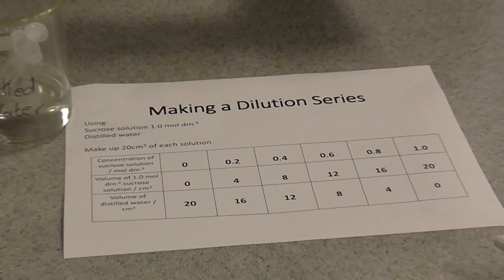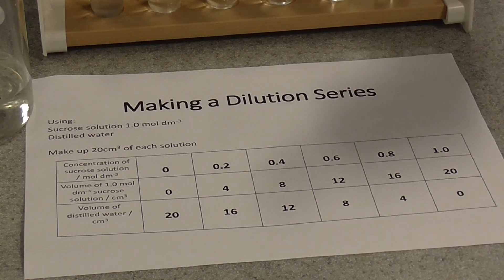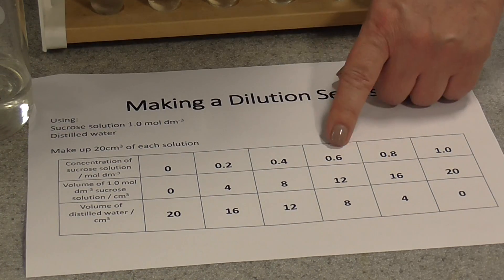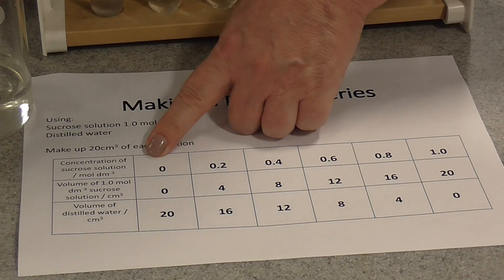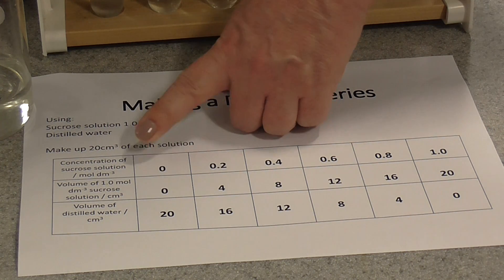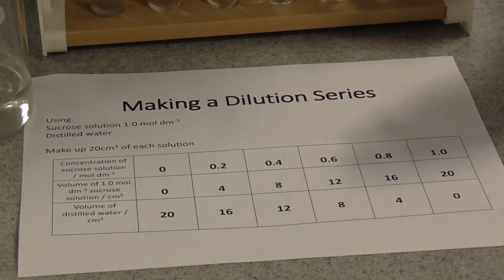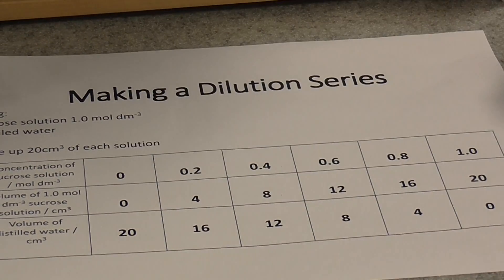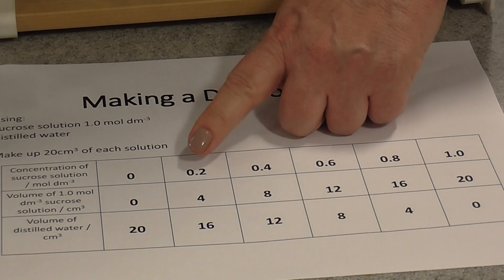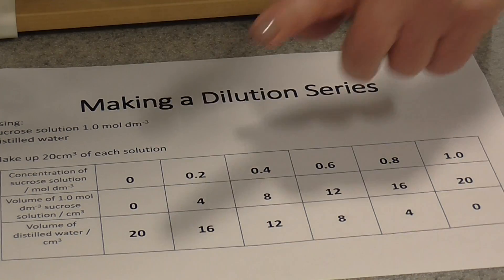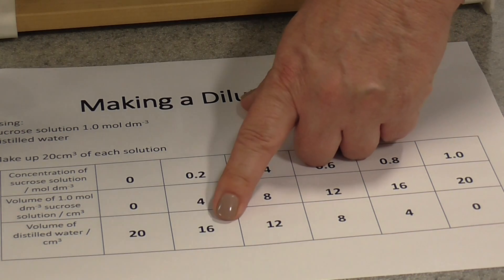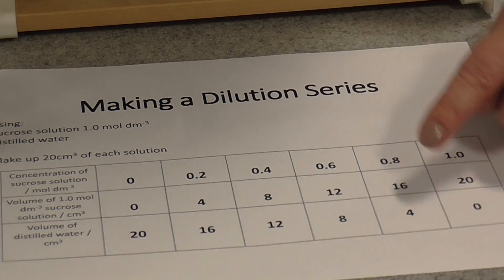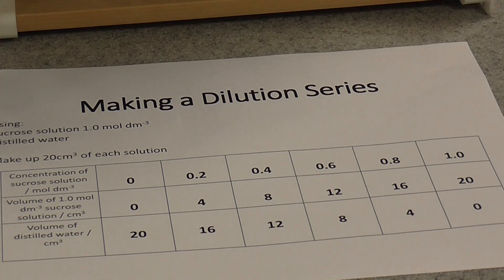First you'll need to label your test tubes. You see I've already made my dilutions here. These are the different concentrations of sucrose solution that we're going to prepare. To make twenty centimetres cubed up, obviously the zero moles per decimetre cubed concentration is just water - twenty centimetres cubed of water, no sucrose. Our 0.2 mole per decimetre cubed solution will need four centimetres cubed of the one molar sucrose solution and sixteen centimetres cubed of water. This table shows you how to prepare the rest of your dilution series.